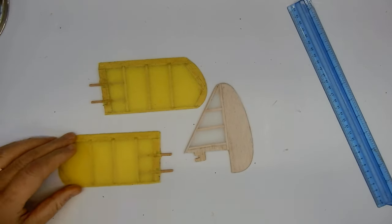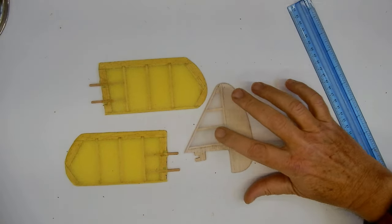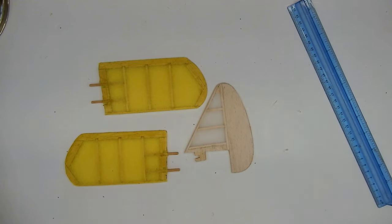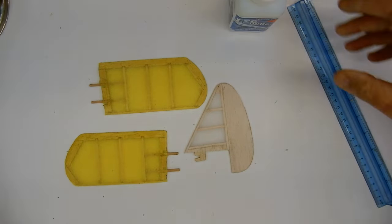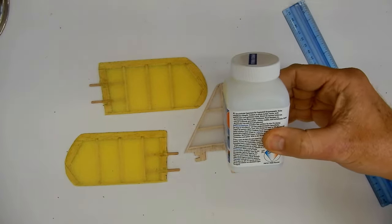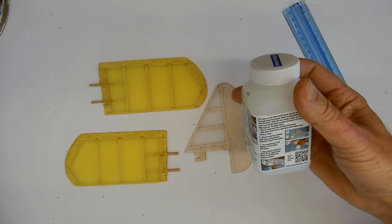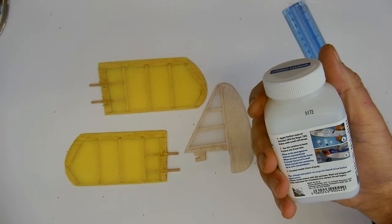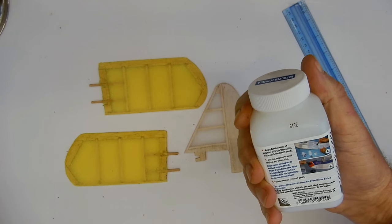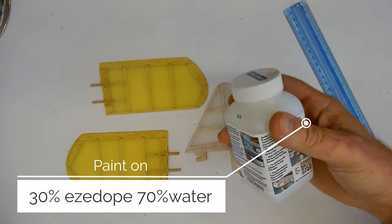That's the tail surfaces with their primary covering. They're reasonably taut now - they've just had the water and 5% easy dope. Now as per the instructions, I'm going to up the concentrate of the easy dope. It says to apply further coats of 30% easy dope and 70% water with a small brush.